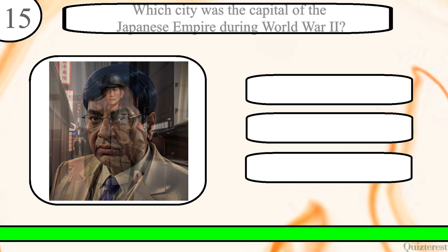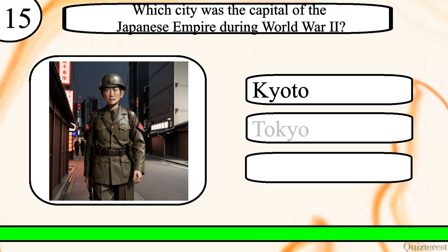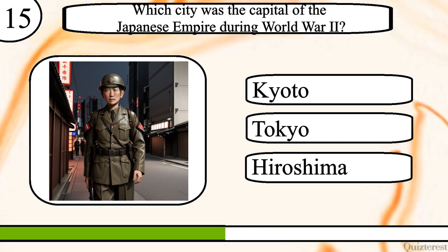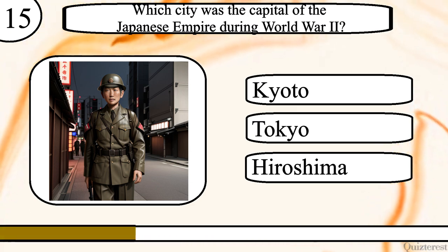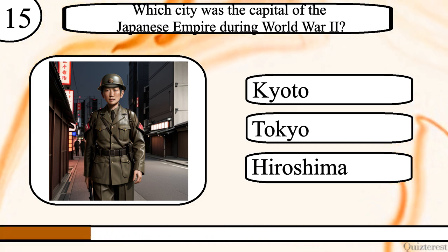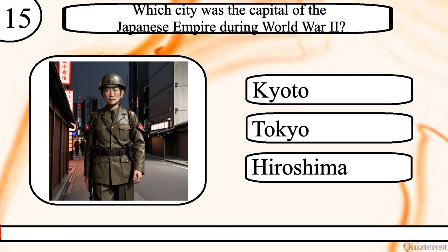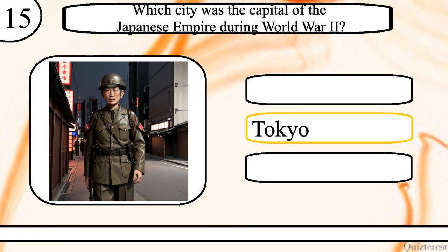Question 15. Which city was the capital of the Japanese Empire during World War II? Kyoto, Tokyo or Hiroshima? The correct answer is Tokyo.